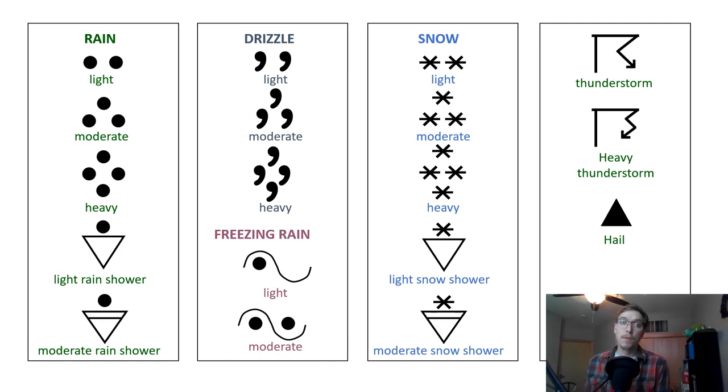And there is a range of different symbols for current weather. If you see just colored in circles, two of them side by side means light rain. Three of them in a triangle formation means moderate rain. Four of them in a diamond means heavy rainfall. The dot with the triangle, light rain shower. The dot with the triangle and the line going through it, moderate rain shower. There's various ways to show and describe these. If you have what looks like a comma, that means it's a drizzle: light drizzle, moderate drizzle, heavy drizzle.